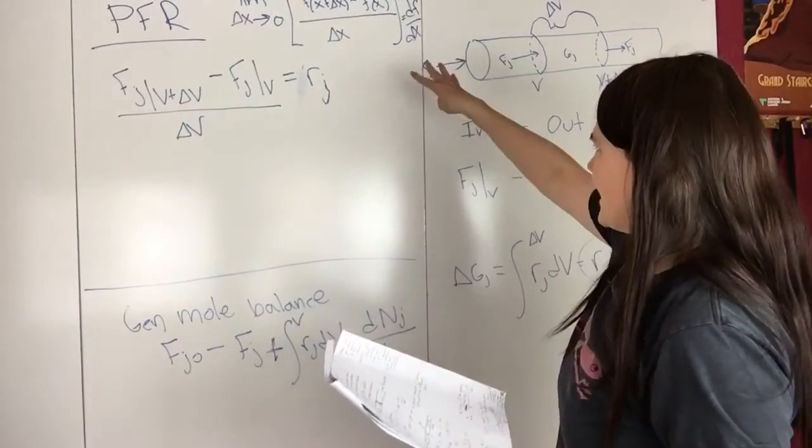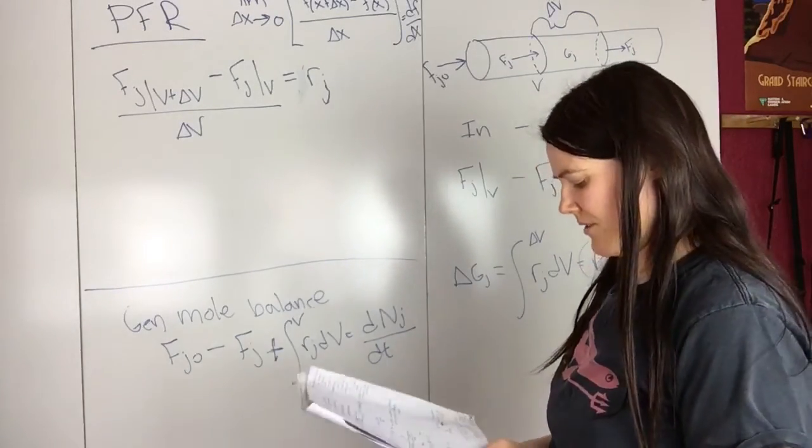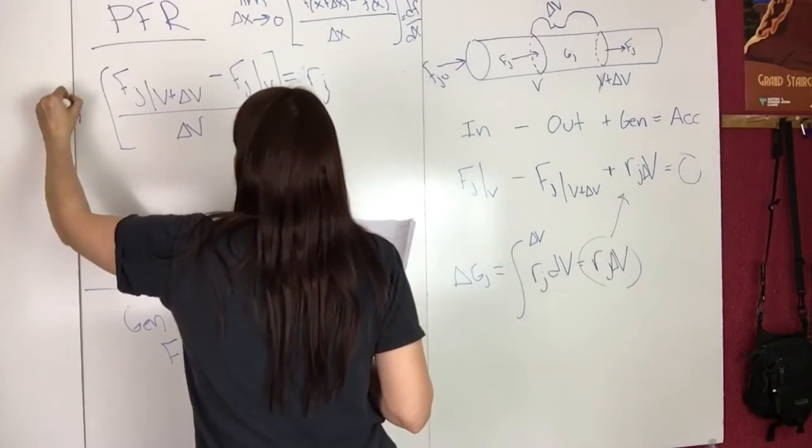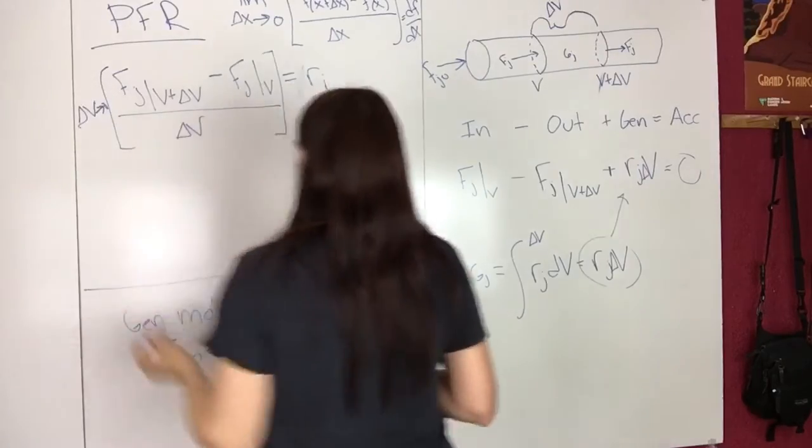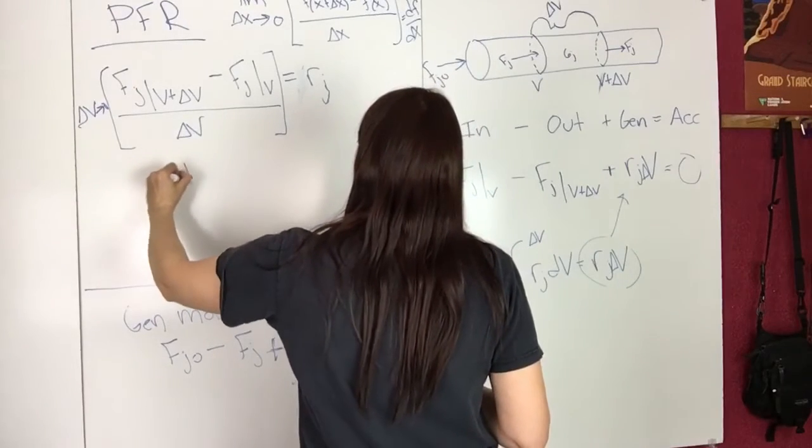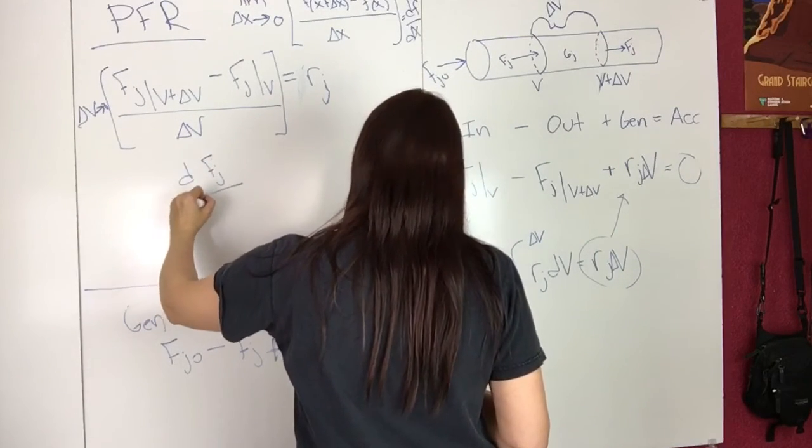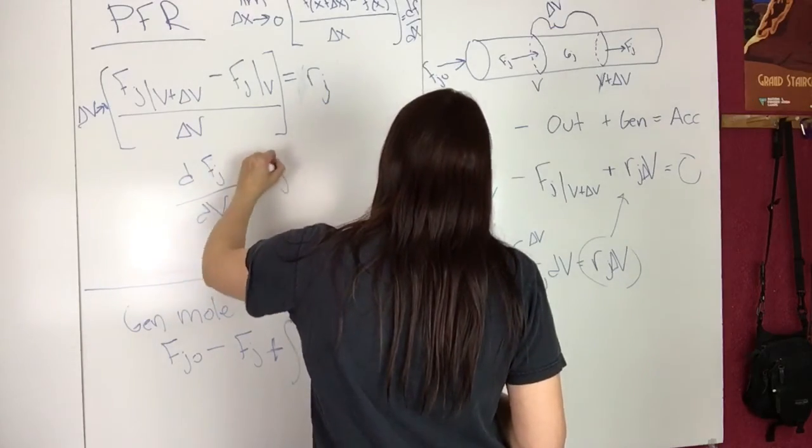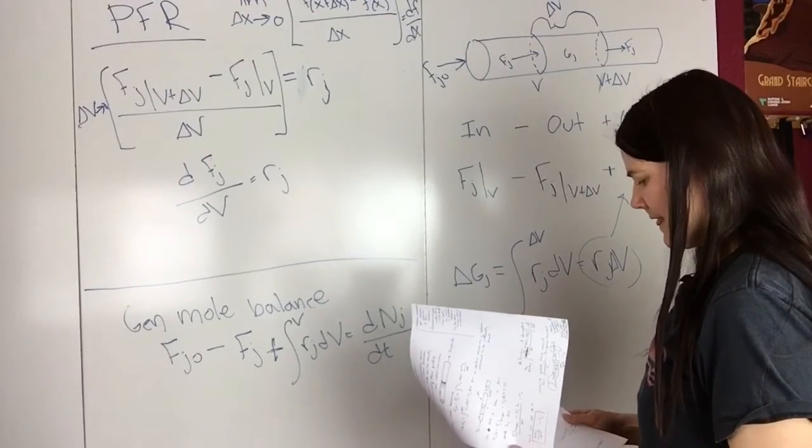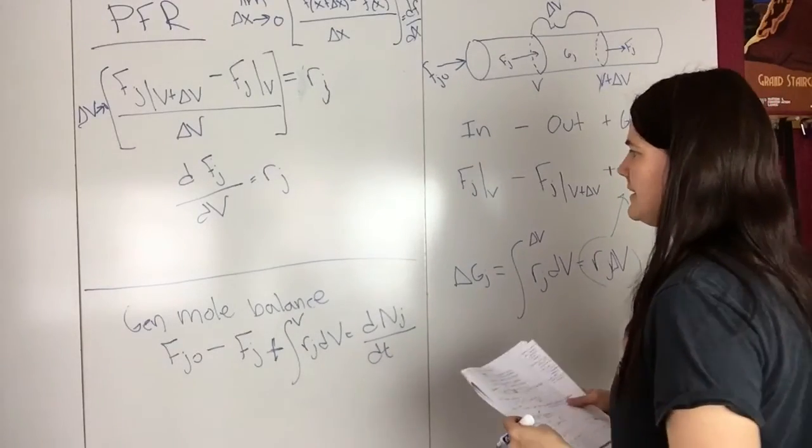Our equation looks like the definition of a derivative. If we take the limit as delta V approaches zero, we end up with dF_J/dV equals R_J.